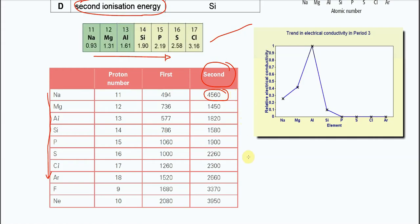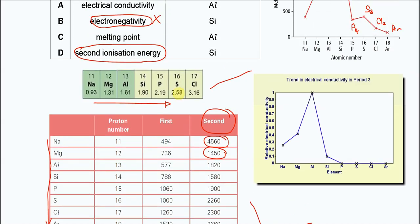After that, it will go down and then increase. So it goes down to 1,400 something, then it slowly increases until it reaches argon. This is how the trend looks like for second IE. So that's why D is not the answer.